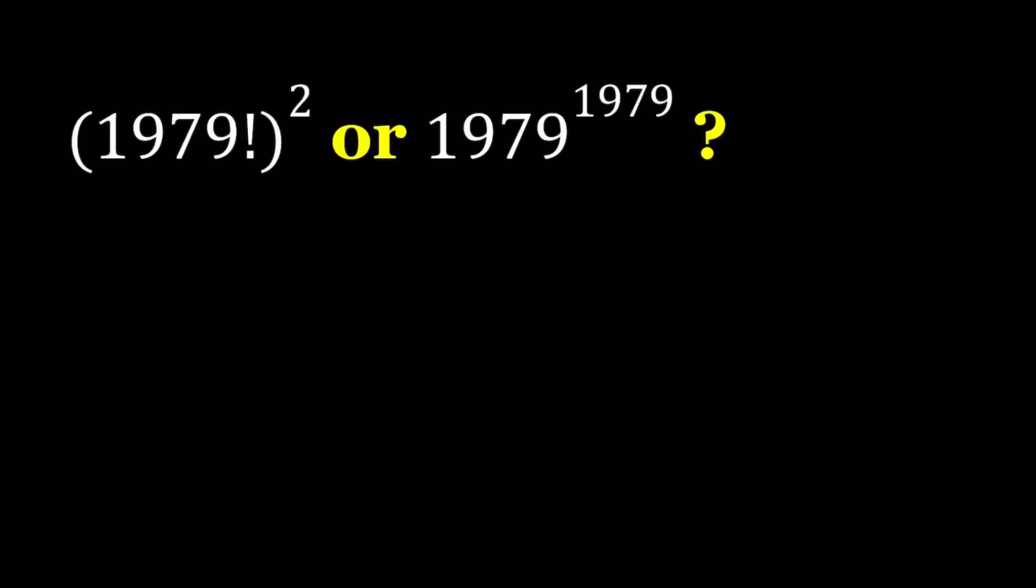1979 factorial squared, or 1979 to the power of 1979. So we have an exponential number and a factorial squared. Obviously one of these is greater than the other. They're not equal for sure. At the end, I'm not going to give you what the numbers are - Wolfram Alpha can give you the answer easily. But I'll give you how many digits these numbers have.